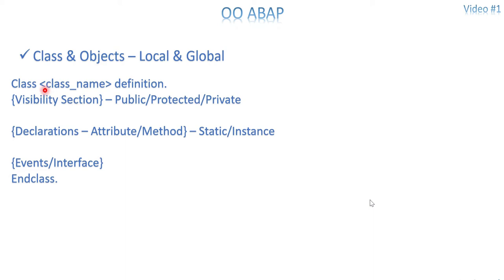Here is the local class syntax. Imagine you are in SE38. The keyword is CLASS, followed by the class name — which can be anything and doesn't need to start with Z or Y since it's inside SE38. Then the keyword DEFINITION, and END CLASS closes the block. Inside the block you have a visibility section: PUBLIC, PROTECTED, and PRIVATE. Whatever you declare as PUBLIC can be accessed outside of the class. PROTECTED and PRIVATE cannot be accessed outside of the class.